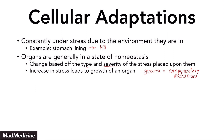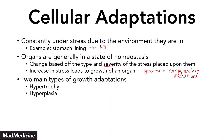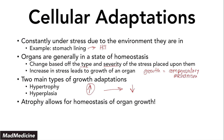When it comes to growth adaptations, we have two main types: hypertrophy and hyperplasia. Both of these have been discussed in a previous lecture series, which I highly recommend you watch. But when it comes to homeostasis, if you have growth occurring in size, you also have to have something that's going to decrease the growth — that would be atrophy. Atrophy allows for homeostasis of organ growth to occur and is one way our bodies return to a normal state.